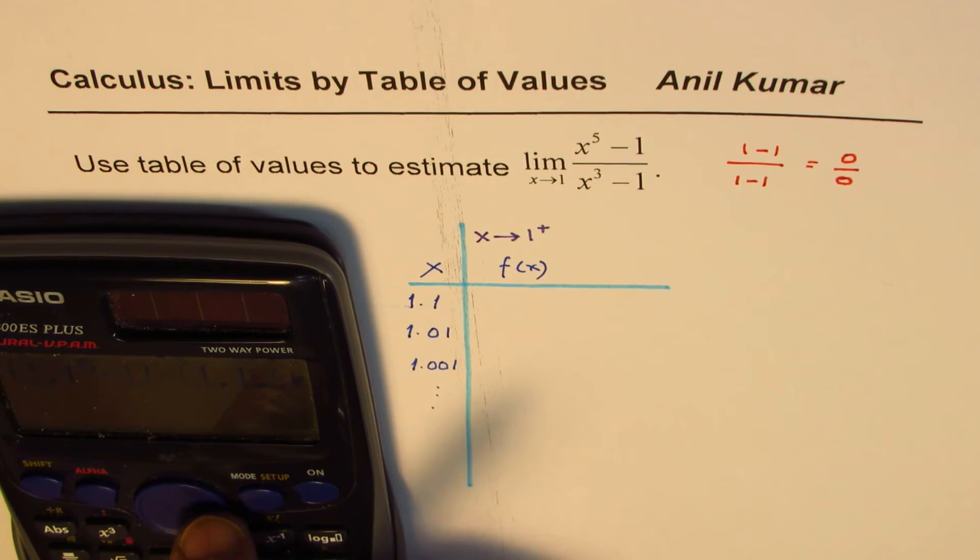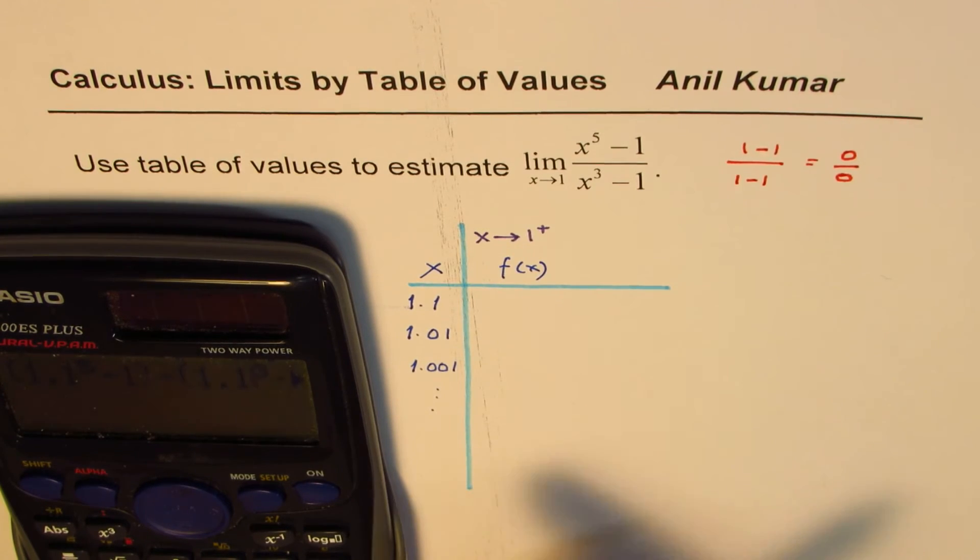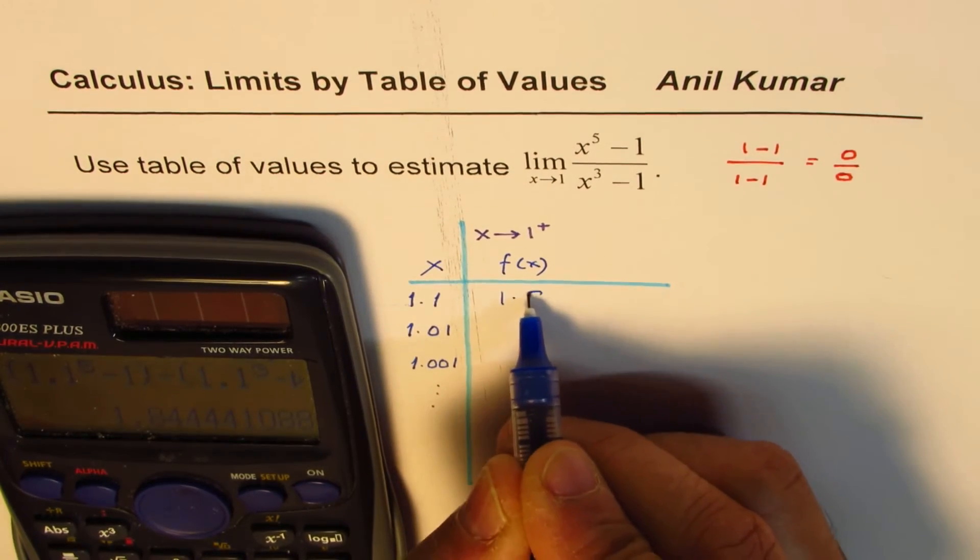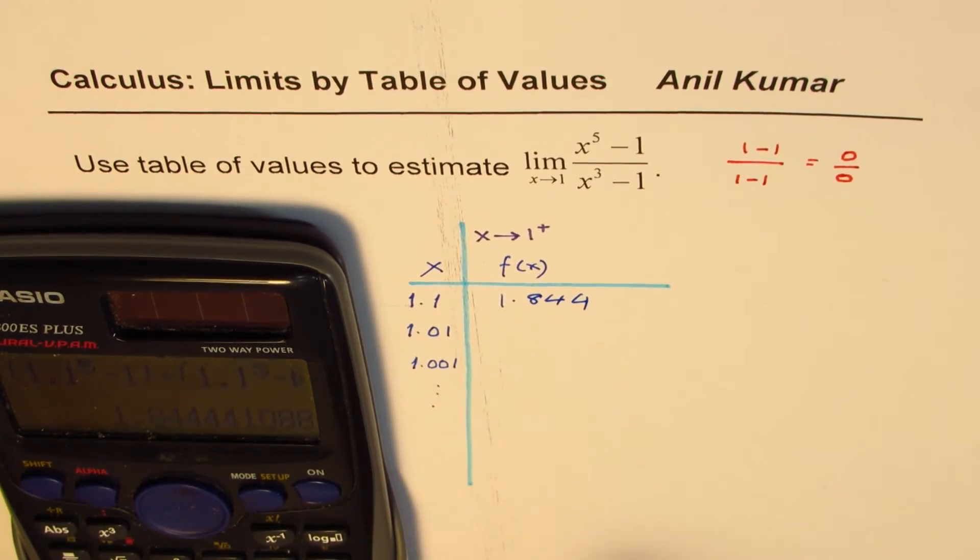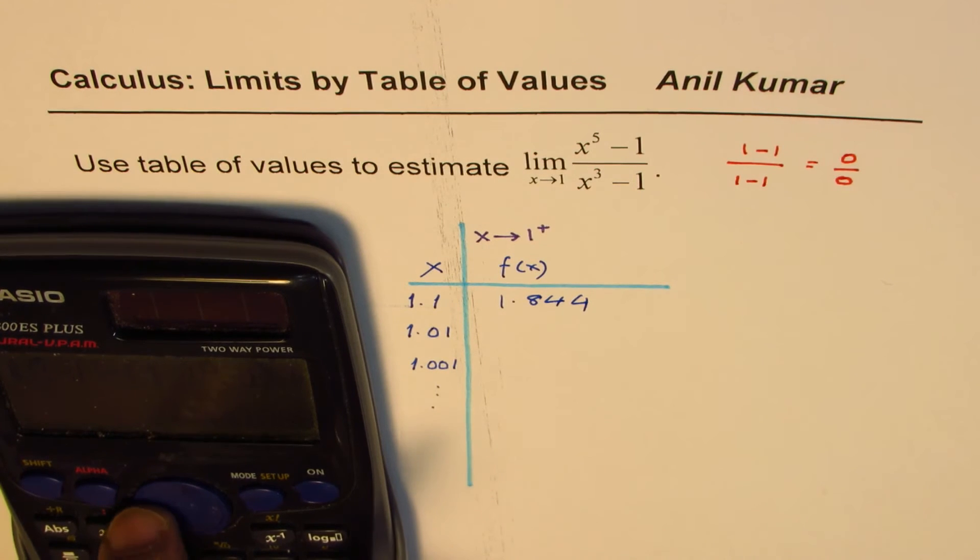Let's delete this. It was easier to rewrite, actually. So 1.1. We have changed x value to 1.1. And let's see the result. The result is 1.844.